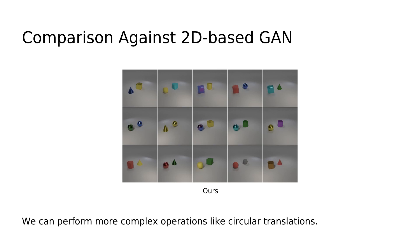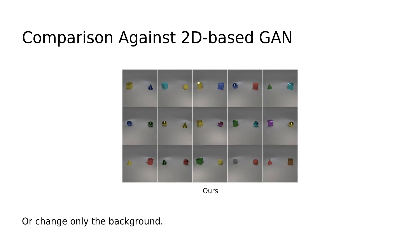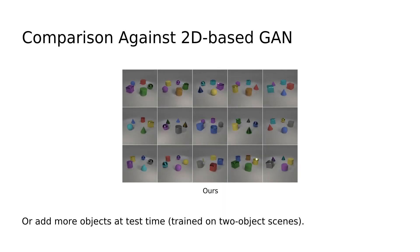This further allows us to perform more complex operations like circular translations or changing only the background or adding more objects at test time. Note that during training, our model has only seen images of two object scenes.